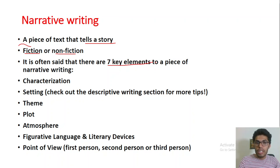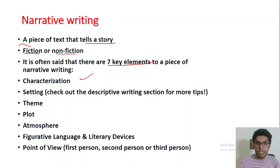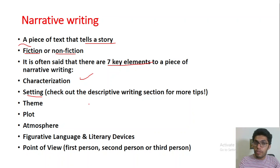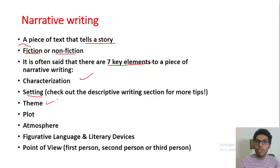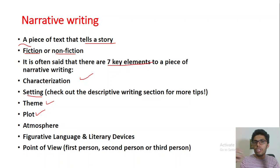The first key element is characterization — the art of developing characters. The next element is setting — basically the place and time of the story. Then theme — the basic idea being expressed through the story. Then plot — the logical sequence of events; long story short, when you tell the whole story in two to three lines, that is the basic storyline. Then atmosphere — the overall environment in the story, whether it is happy, nostalgic, stressful, sad, or ironic.